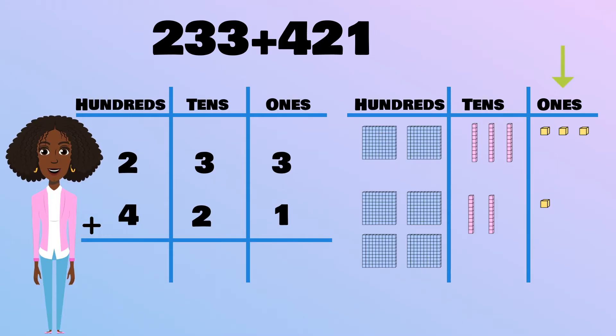I'll begin by adding the ones place together. 1, 2, 3, 4. Next, I will add the tens place together. 1, 2, 3, 4, 5.